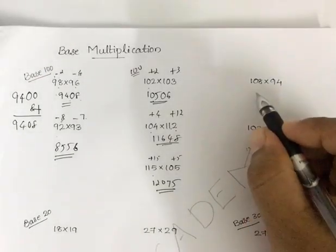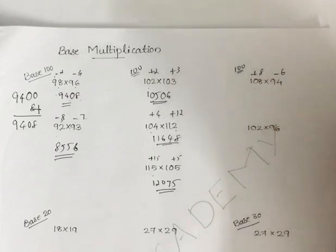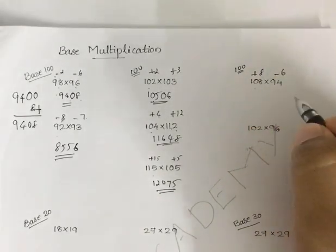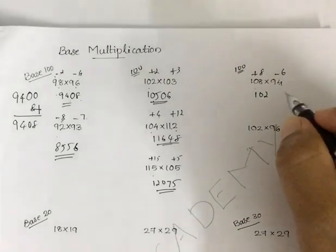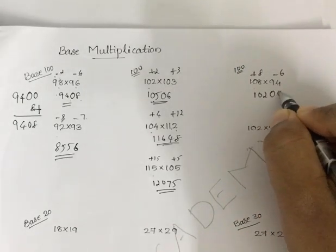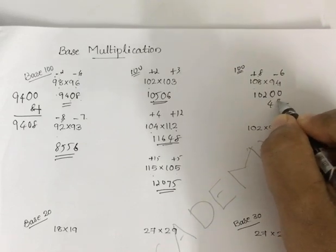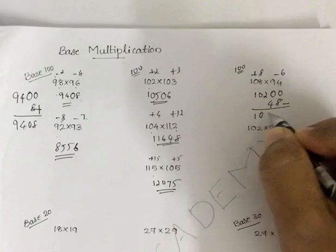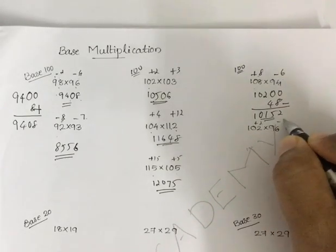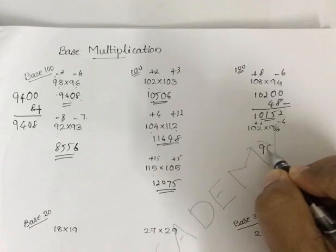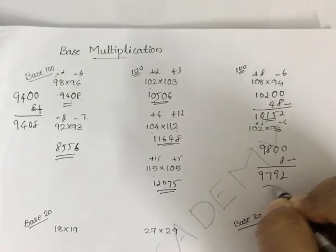Now when one number is above the base and one is below the base — for example 108 into 94 — 108 is plus 8 and 94 is minus 6. So 108 minus 6 is 102, or 94 plus 8 is also 102. You multiply 102 with the base 100, then subtract because 8 into minus 6 is minus 48. So the answer is 10152. Similarly for 102 into 96: plus 2 and minus 4. 96 plus 2 is 98. Multiply with the base, then 2 into minus 4 is minus 8. The answer is 9792.